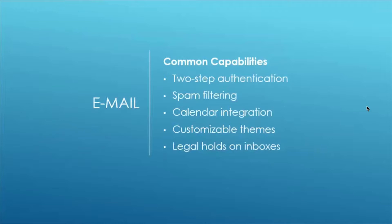One thing the Google product is limited on is that you cannot change the number of panes in the window — you're stuck with a three-pane option. Whereas in Outlook, you can close sidebars and change to a two-pane or one-pane window, whatever works best for you. Both do have the option to put legal holds on inboxes — if an employee with access to sensitive data is no longer with the company, both have that option, which was recently rolled into the Google product as well.